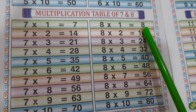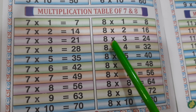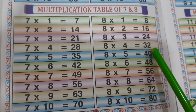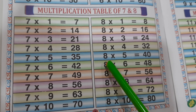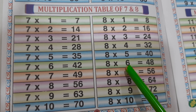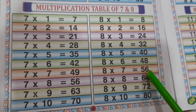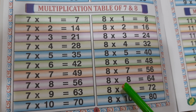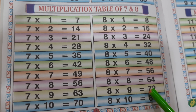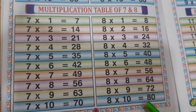8 1's are 8. 8 2's are 16. 8 3's are 24. 8 4's are 32. 8 5's are 40. 8 6's are 48. 8 7's are 56. 8 8's are 64. 8 9's are 72. 8 10's are 80.